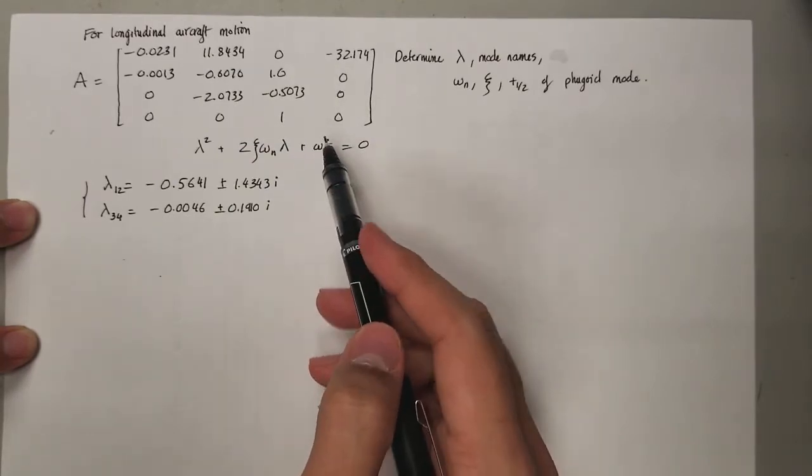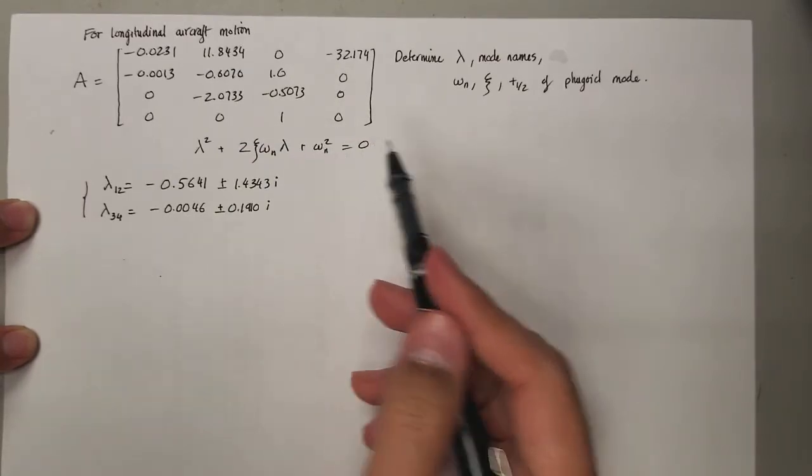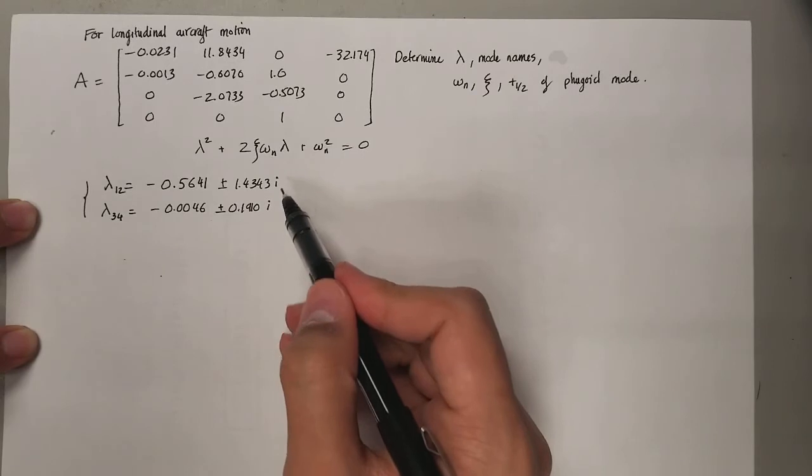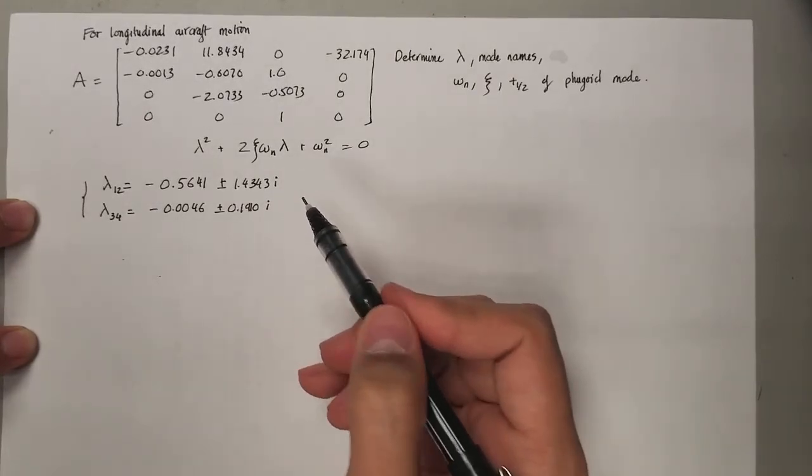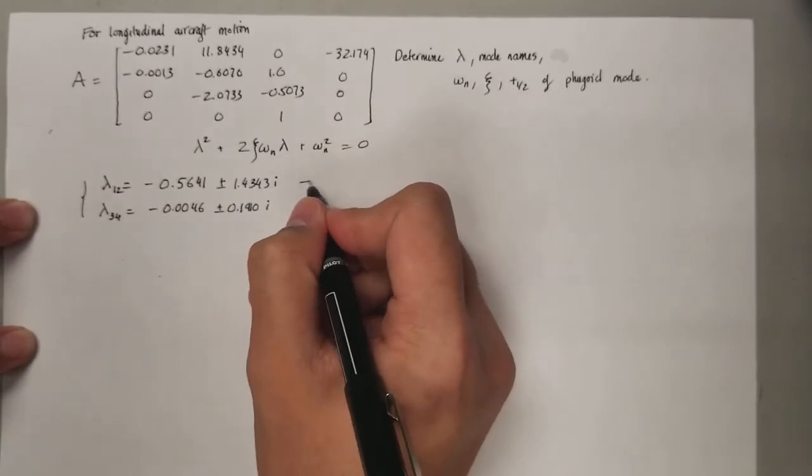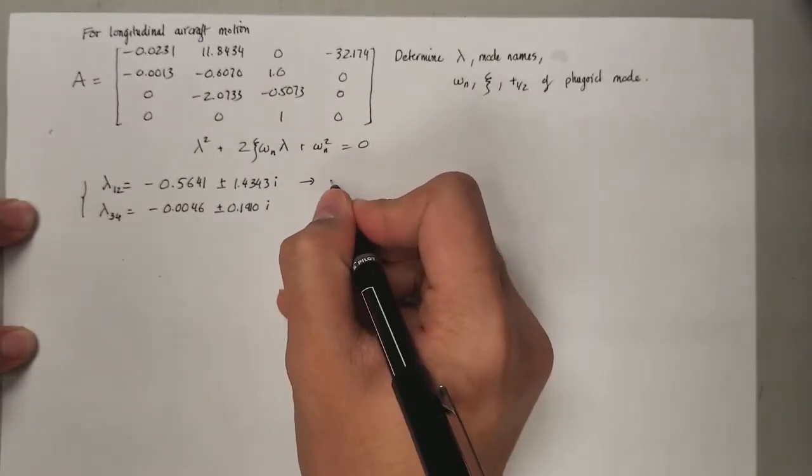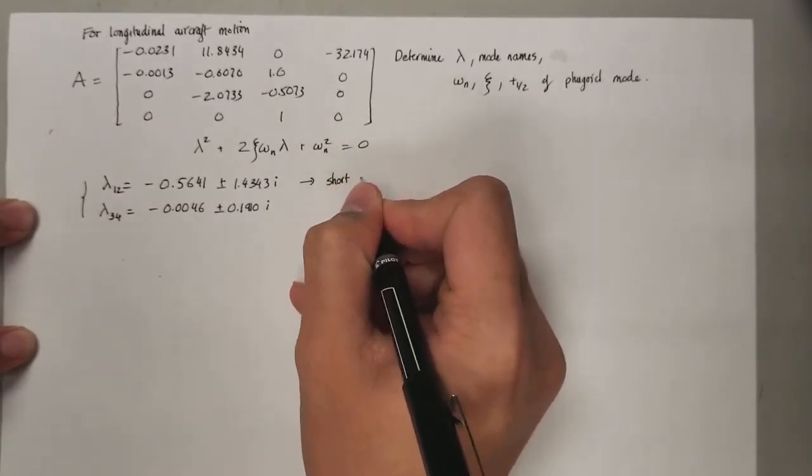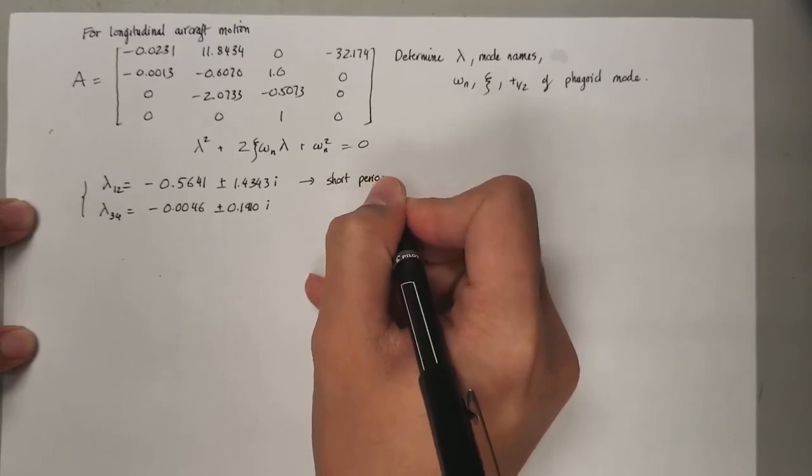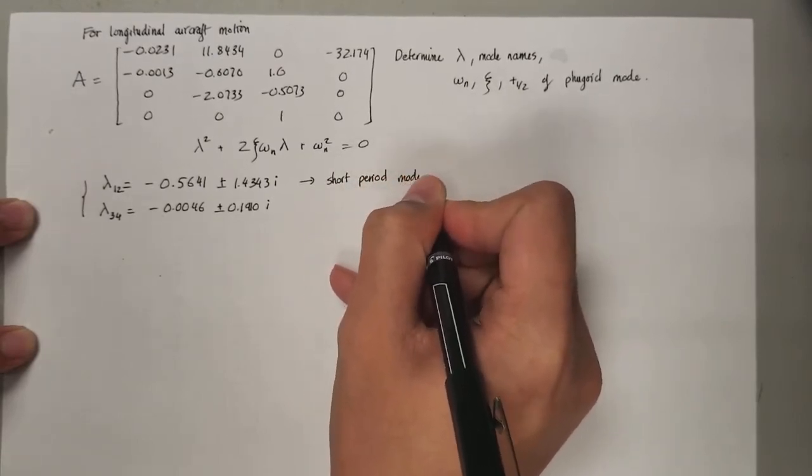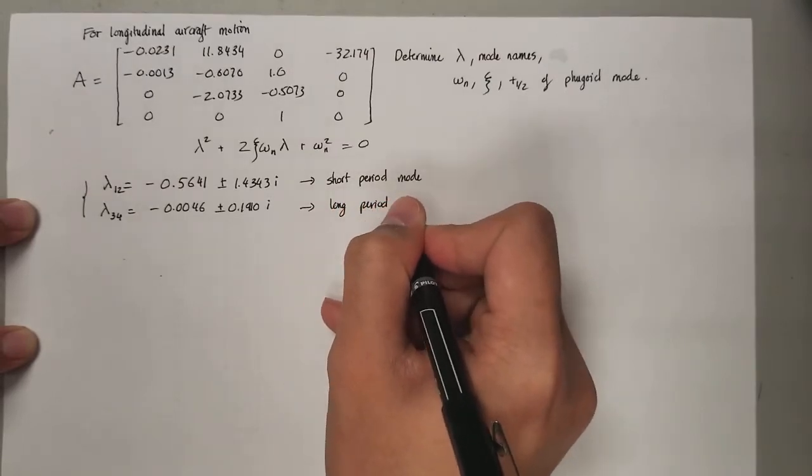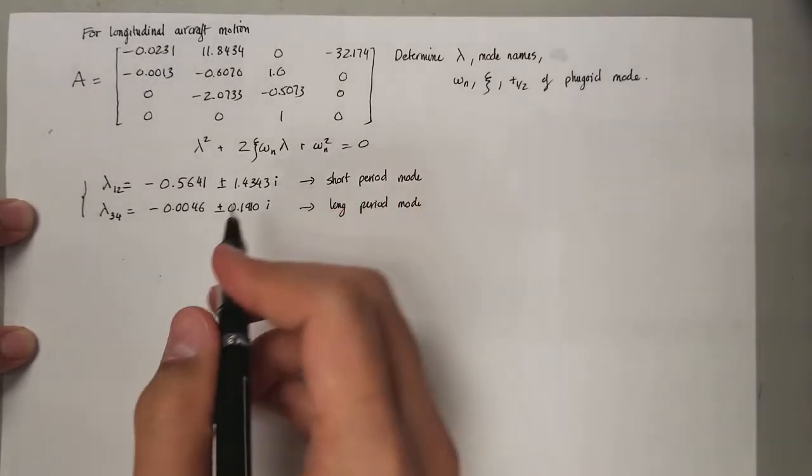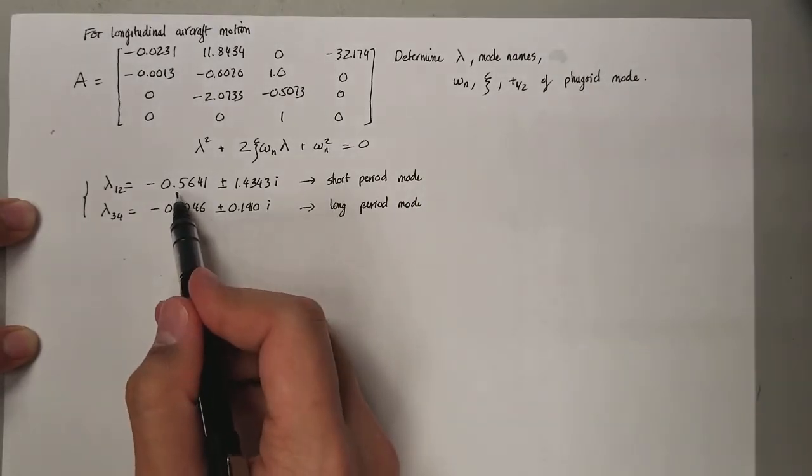Short period and long period, or the phugoid. Which one of these is a short period and which one is long period? This is the short period mode and this is the long period mode.